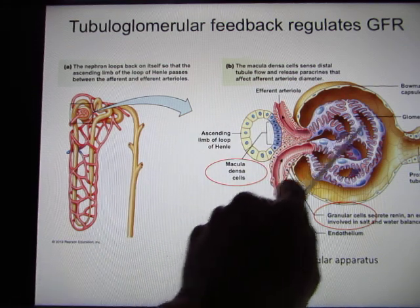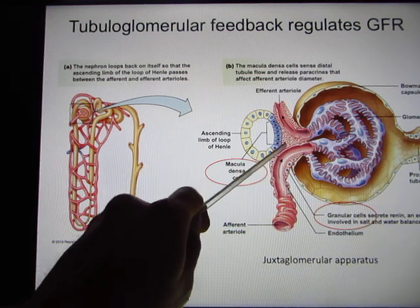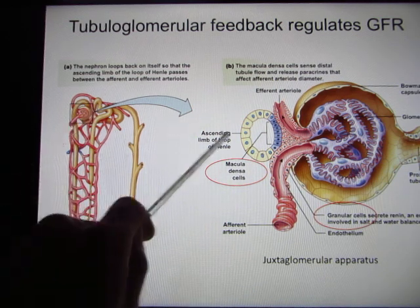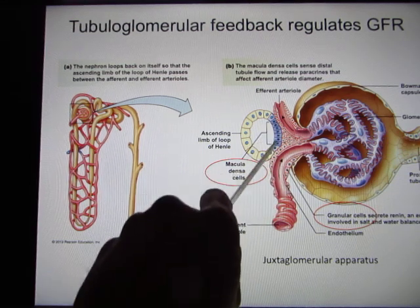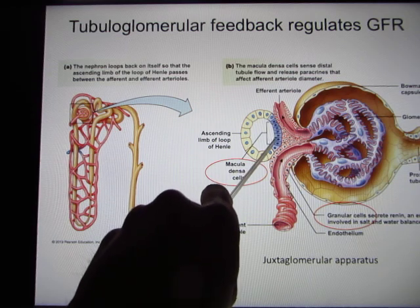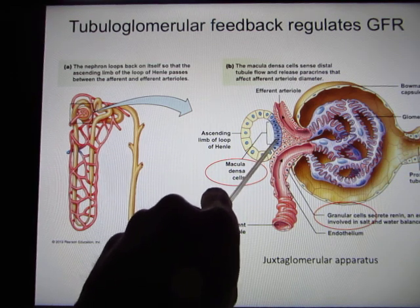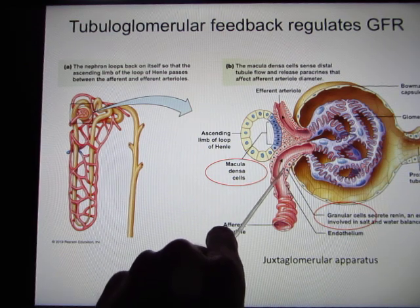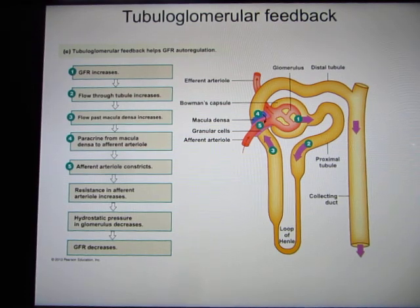More blood will be filtered in and become filtrate in the lumen, then it goes to the distal tubule and up through the ascending loop. Because of the structure, the ascending loop is actually close to the afferent arteriole. In the ascending loop you have a group of cells called macula densa cells, and once flow increases they release a paracrine signal, which is picked up by the neighboring juxtaglomerular (JG) cells.